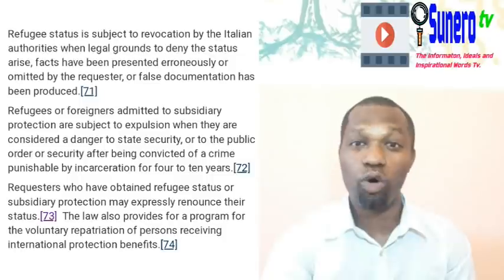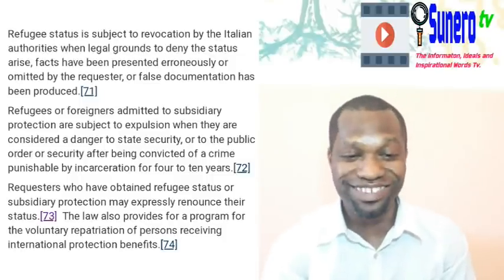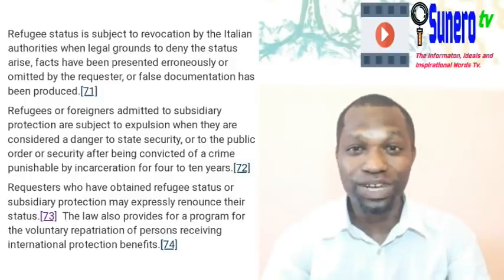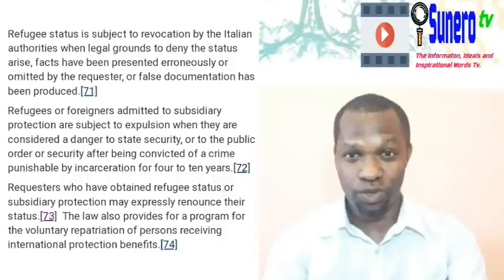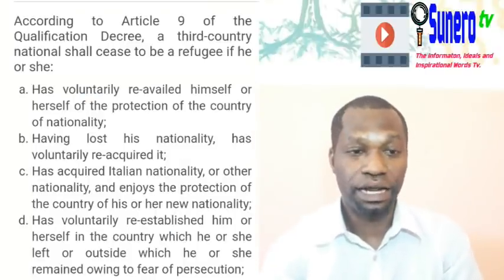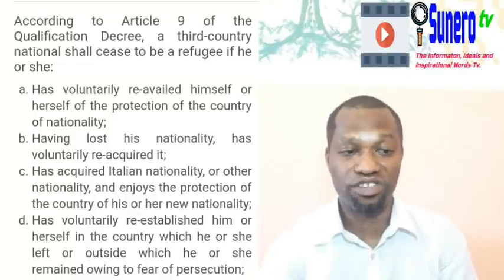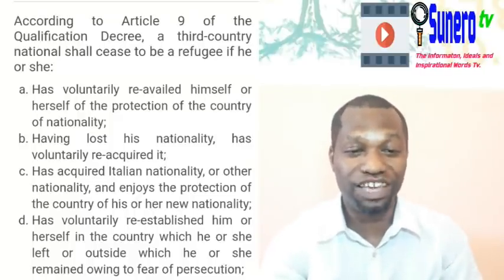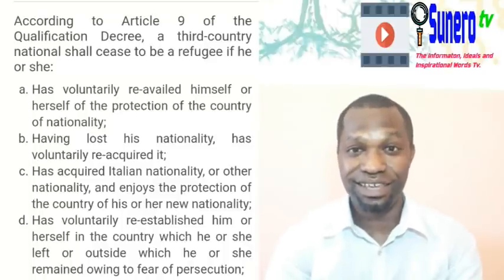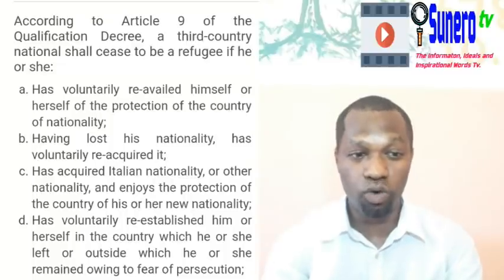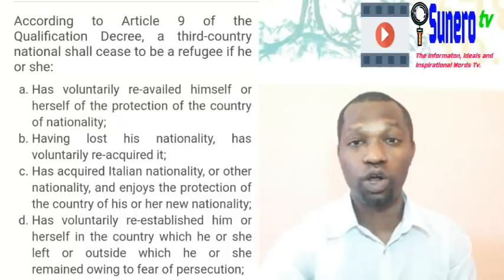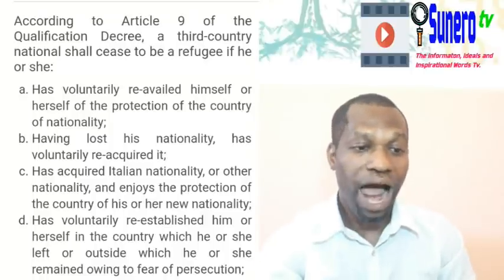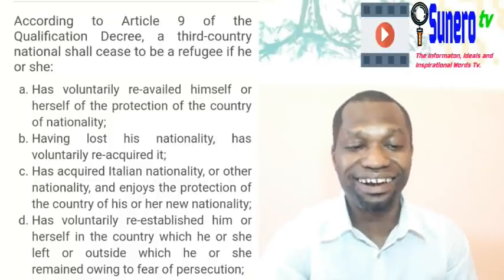Requesters who have obtained refugee status or subsidiary protection may expressly renounce their status — you can cancel it yourself if you no longer need it. According to Article 9 of the qualification decree, a third country national shall cease to be a refugee if they have voluntarily re-affirmed themselves under the protection of their country of nationality. If you go back to your country because your country was not safe for you, your protection will automatically be seized.